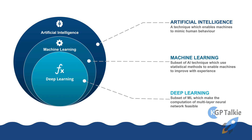Now let me tell you — you might have heard a lot about artificial intelligence, machine learning, and deep learning. Do you know the difference between these three terms? Artificial intelligence is a technique which enables machines to mimic human behavior.